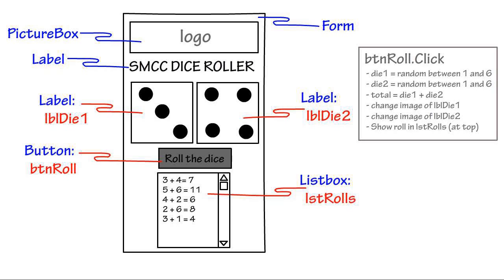This is going to take about 8 to 10 lines of code — it's a very simple program. But I want you to see the process that we go through. We've identified our problem: we need some dice. We've analyzed how to solve it, storyboarded and designed it, and now we're ready to develop. I'm going to jump over to Visual Studio to do that.